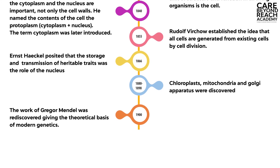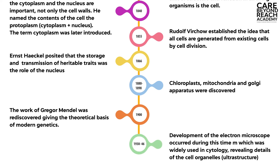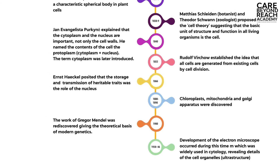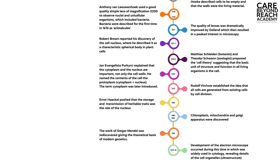In the 1900s, the work of Gregor Mendel was rediscovered, giving the theoretical basis of modern genetics. In 1930 to 1946, development of the electron microscope occurred. This was widely used in cytology, revealing details of cell organelles, which we call the ultra-structure. Many biologists contributed to the development of the cell concept, which evolved gradually during the 19th century as a result of the steadily accelerating pace of developments in microscopy and biochemistry.